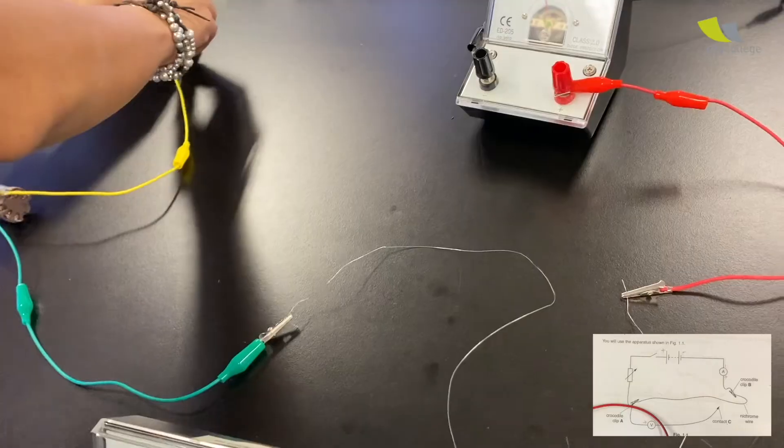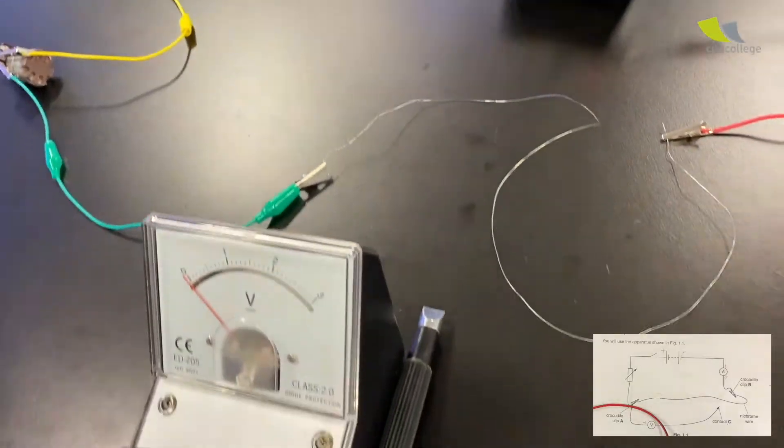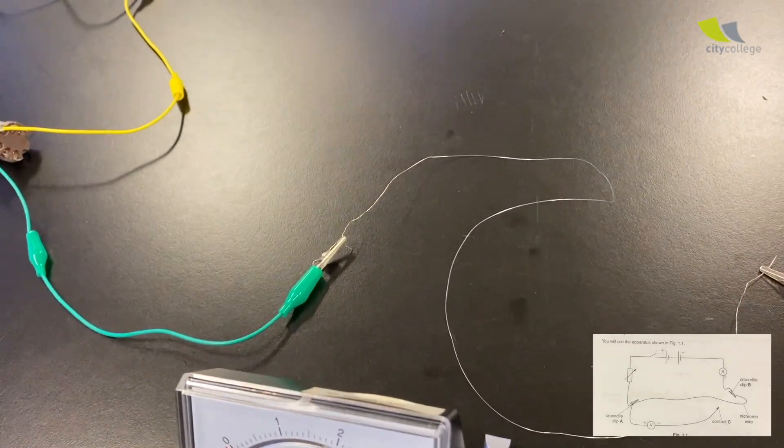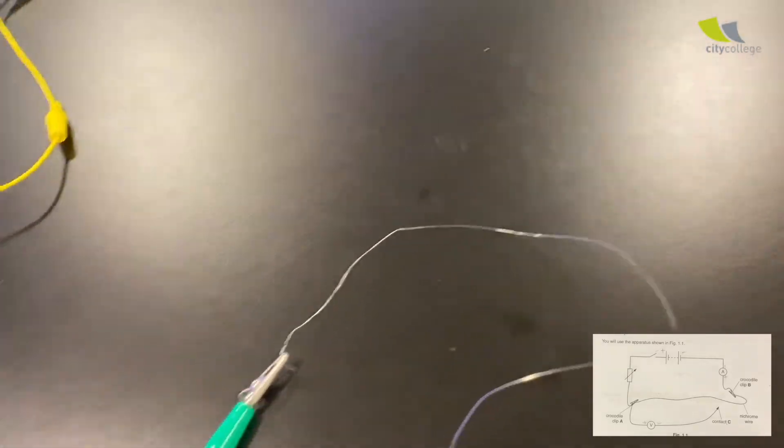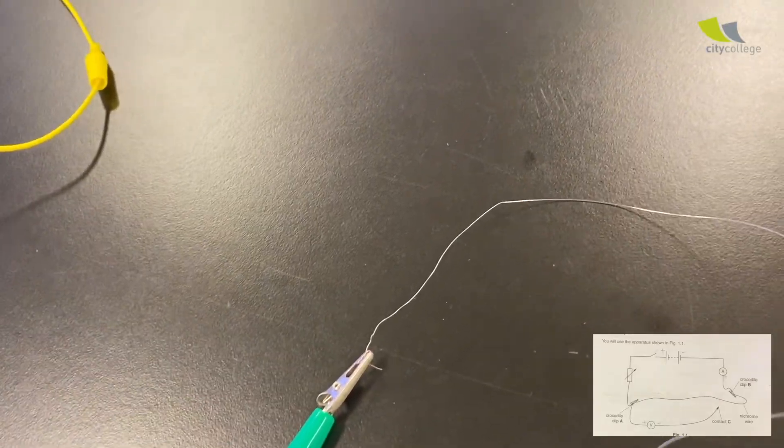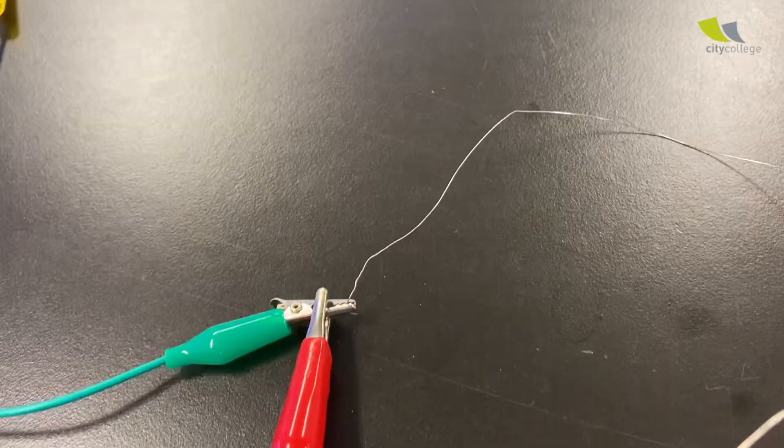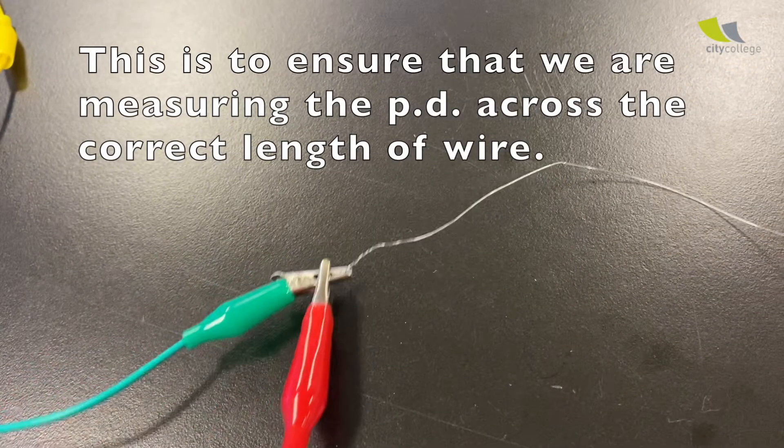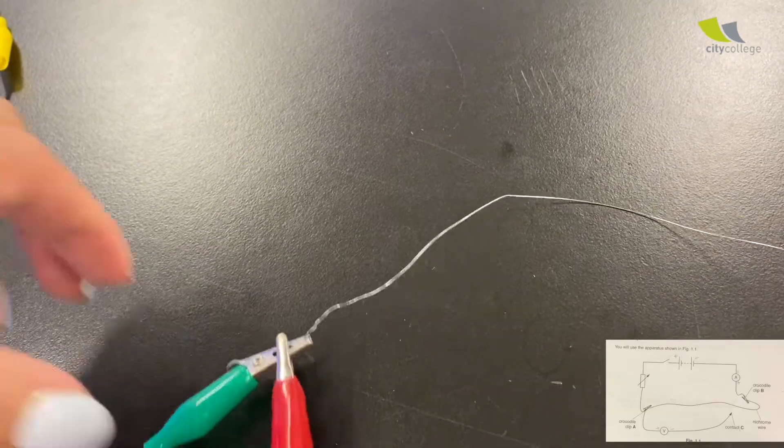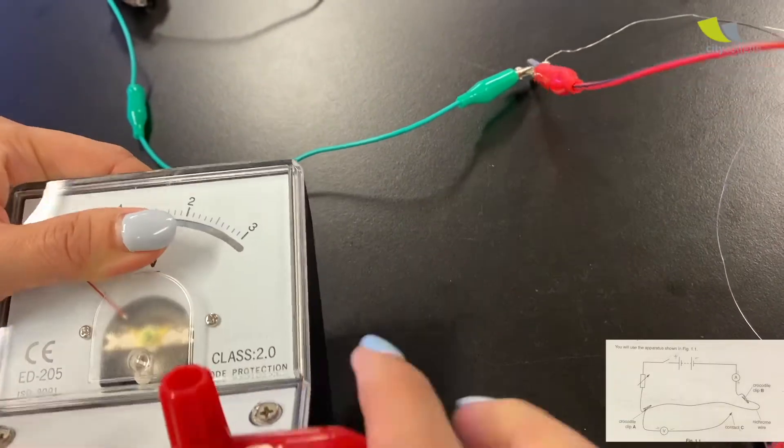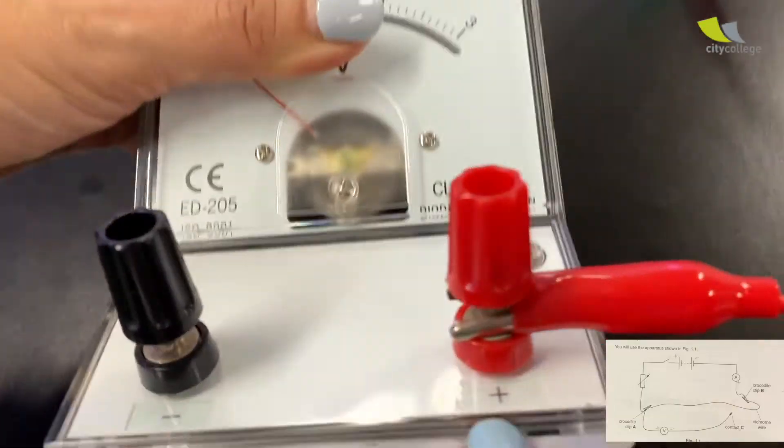Okay. Now, the voltmeter side, which is a parallel connection. She's going to switch off. So go and connect to the crocodile clip. So, crocodile clip. Yeah. So make sure that you don't clip the wire. Right?